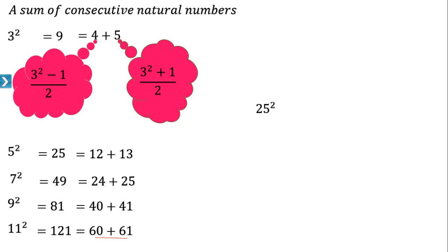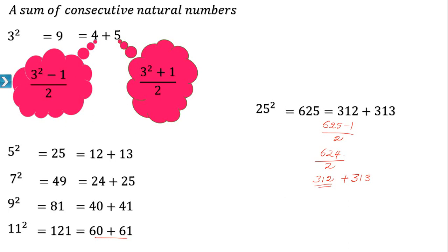Now express 25² as the sum of two consecutive natural numbers. 25² is 625. What you have to do is (625 − 1) / 2 = 624 / 2 = 312. So 625 equals 312 plus 313. In this way we can express any square number as the sum of two consecutive natural numbers.